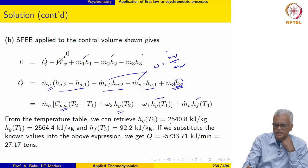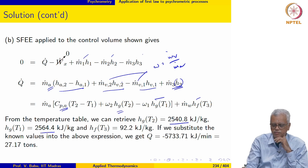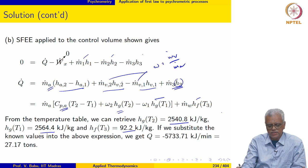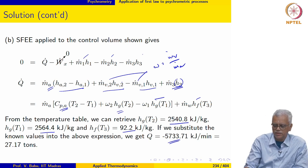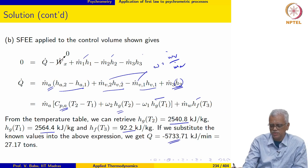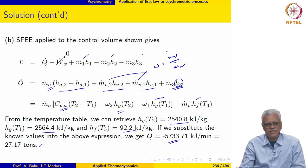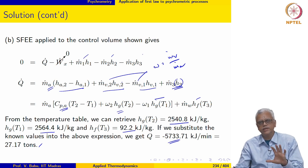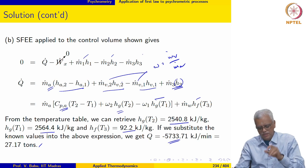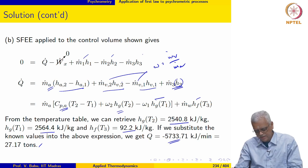Retrieving hg(T₂), hg(T₁), and hf(T₃) from the temperature table and substituting into the energy expression, the cooling capacity Q works out to 27.17 tons of refrigeration.